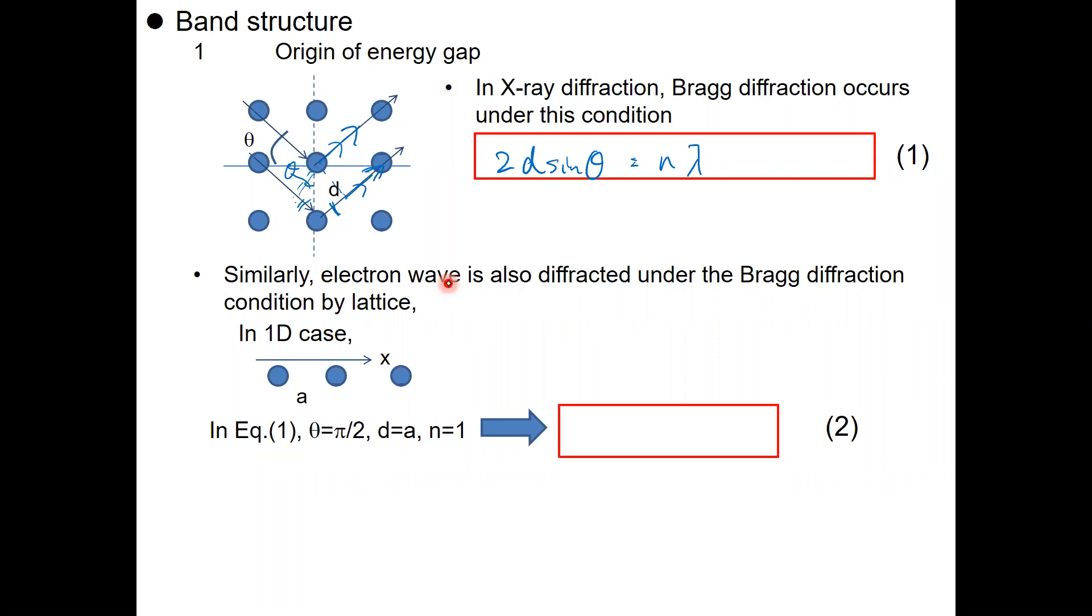And then, let's think about simply the one dimensional case first. We take the x-direction where there's an interval of a for each atom. In this case, in equation 1, theta is equal to pi over 2, d equals a, and n equals 1. Let's simplify the equation; it's simply lambda equal to 2a.